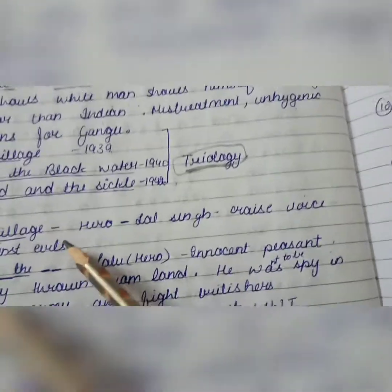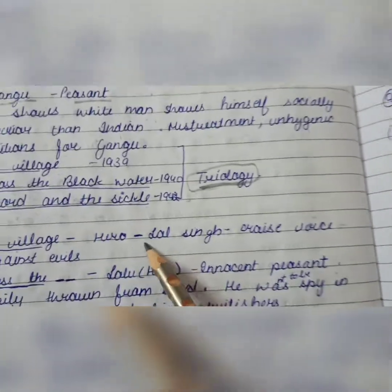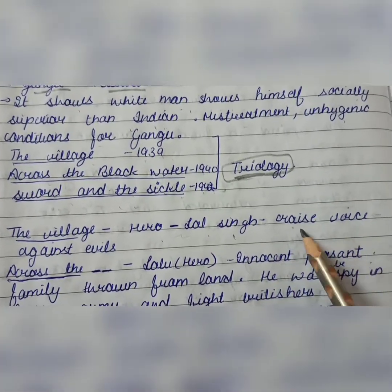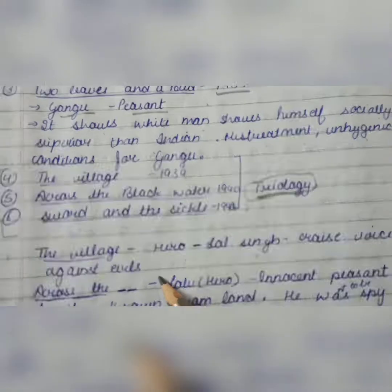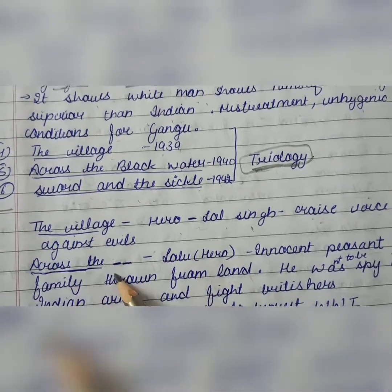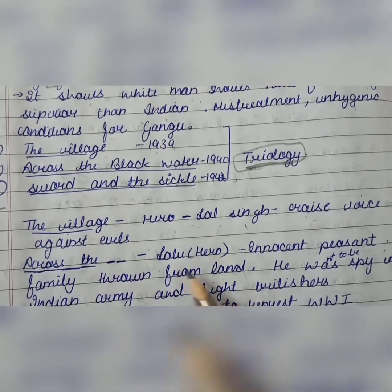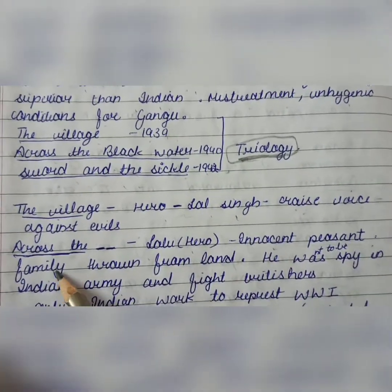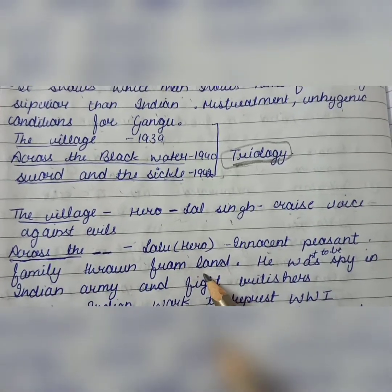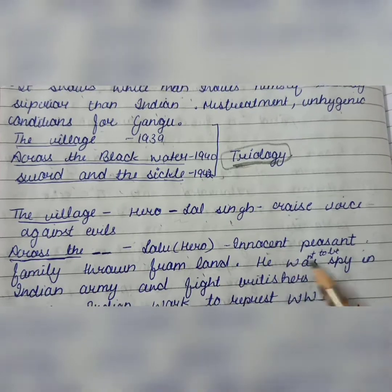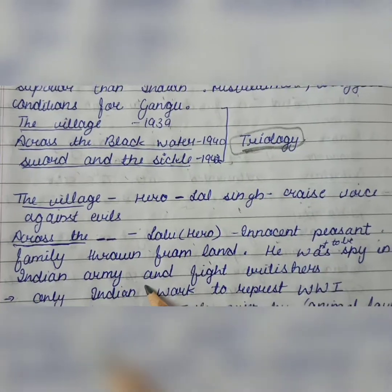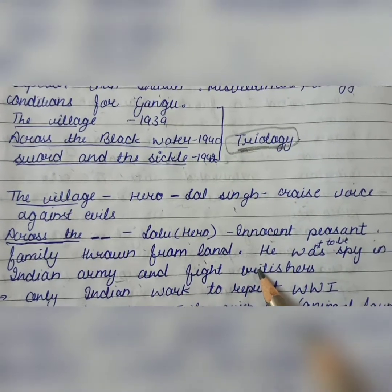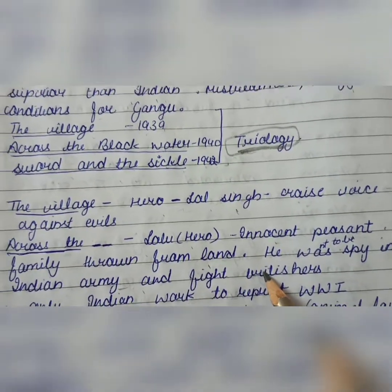In The Village, the hero is Lalsingh, who raises his voice against evil. In Across the Black Water, the hero is also Lalsingh — an innocent peasant whose family is removed from their land. He wants to join the Indian army but his dream is not fulfilled.